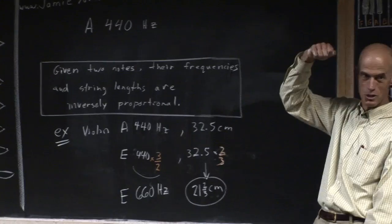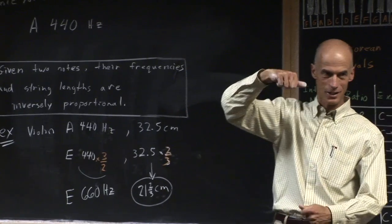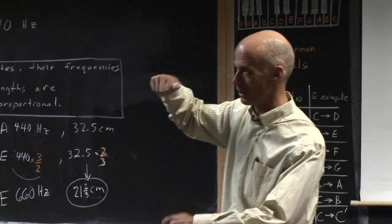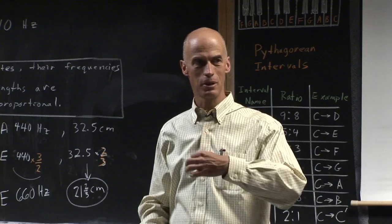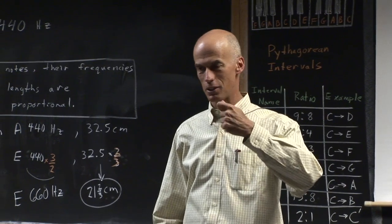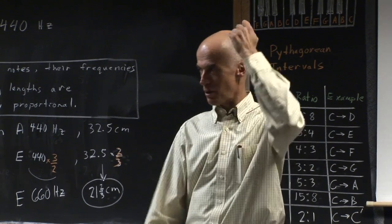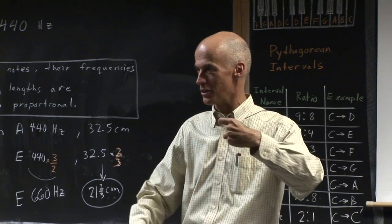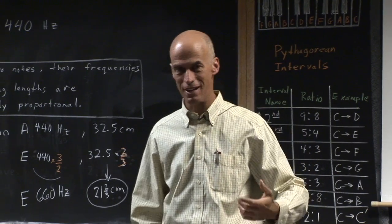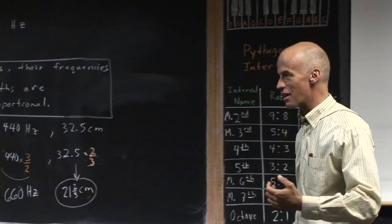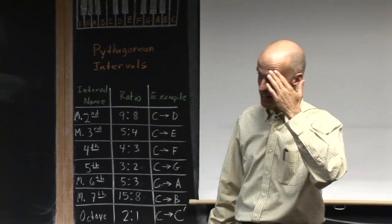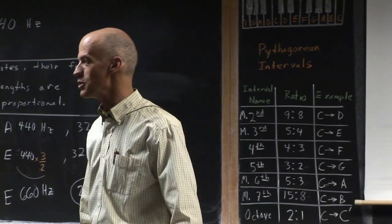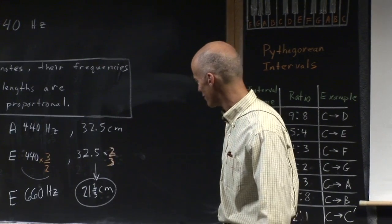If I start on the A string, where do I need to press to get the fifth above? I need to make the string shorter, two-thirds as long, which if the string started at 32.5 centimeters, I now can get out a tape measure. I do this with my 10th grade for kicks. I get out the cello and play Twinkle on the cello. I play the first two notes, get out my tape measure, measure exactly where I need to be, put my finger there, and get the third note.